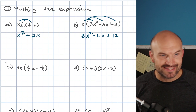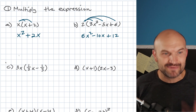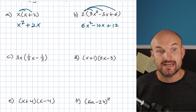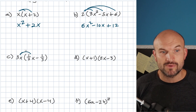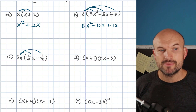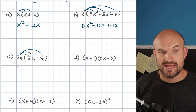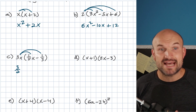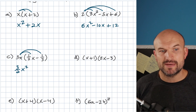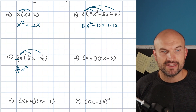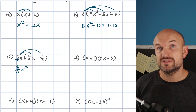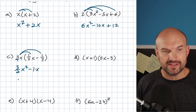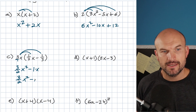When you see fractions, don't get confused — follow the exact same steps. We're going to multiply 3X times one-half X as well as times negative one-third. Multiply number times number and variable times variable: three times one-half is three-halves, and X times X gives X squared. Then 3X times negative one-third: three over three is one, but it's negative one, so that's just negative X. The final result is three-halves X squared minus X.